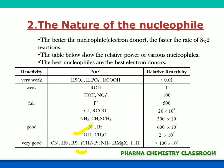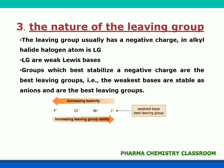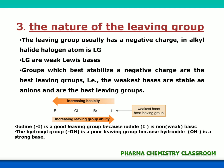Now we will see how the nature of the leaving group affects SN2 reaction. Leaving groups are halogen atoms attached to the substrate — the alkyl halide. When heterolytic fission takes place, this halogen atom leaves taking its electron pair as a negatively charged anion. Groups that stabilize the negative charge are the best leaving groups. Weak bases like I⁻ are very good leaving groups, but OH⁻ is a poor leaving group because it is a strong base and immediately donates its electron pair to an acceptor. Weak Lewis bases that can remain stable as anions are the best leaving groups.